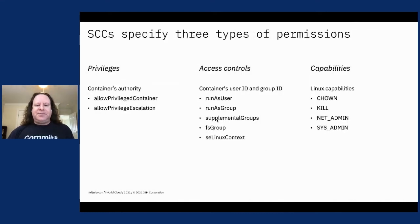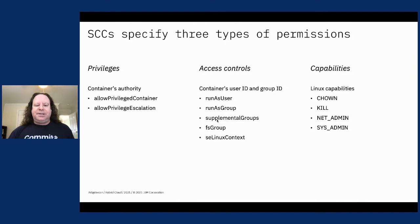An SCC can specify three different types of permissions. Privileges refer to whether this container can run as a privileged container. Access controls refer to what user and group this container can run as. Capabilities are specific Linux functions — such as kill or chown — and whether or not you're allowed to run them. Normally these are not allowed, but you can specify capabilities to enable them.